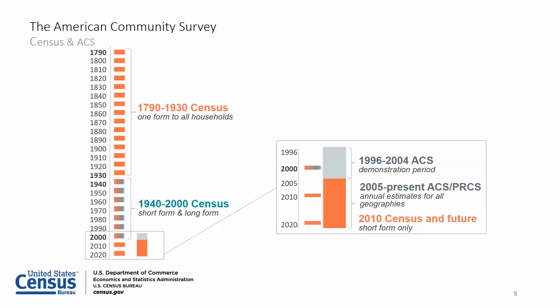In the early 1990s, demand from a wide variety of users for current nationally consistent data led federal government policy makers to consider the feasibility of collecting social, economic and housing data continuously throughout the decade. In 2000, a large-scale demonstration of the American Community Survey was conducted. The ACS was then fully implemented in 2005. There's also the Puerto Rico Community Survey, which is equivalent to the ACS in Puerto Rico. In 2010 and moving forward, the Decennial Census is only a short form, because the ACS now collects information each year that was once collected by the long form each decade.